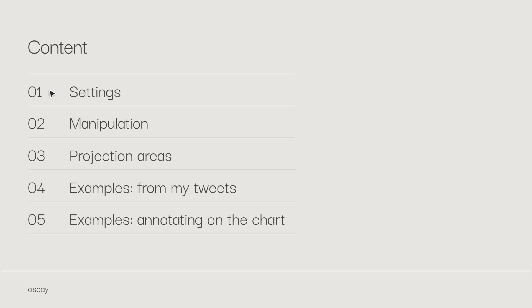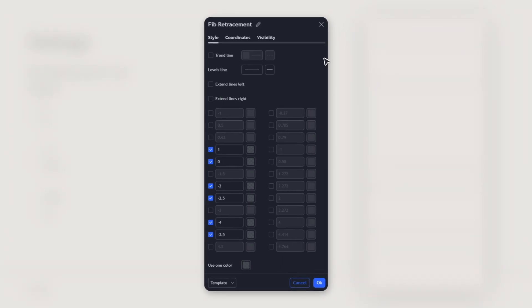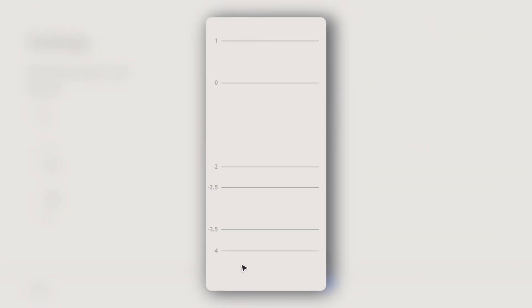So in this video, we're going to talk about the settings you need. Then we're going to talk about the manipulation lag that we need to use for the projection areas. And I'm going to go through some examples from my tweets and annotate it on the chart. For the settings, I use a Fibonacci retracement tool, and these are the values I use — just copy them. When you plot it on your graph, it's going to look like this.